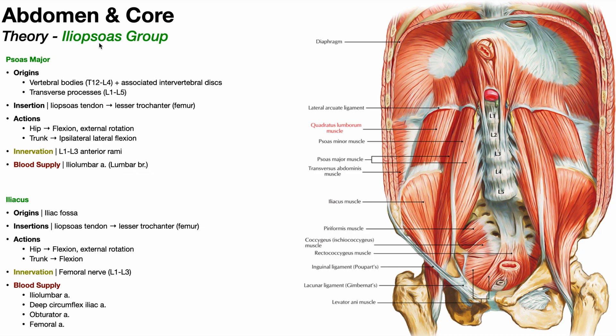The iliopsoas muscle group — when somebody uses the term iliopsoas, they're referring to a group of two muscles: the psoas major and the iliacus.